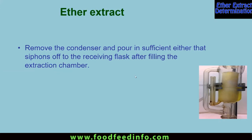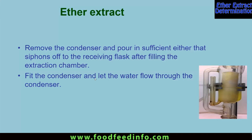Remove the condenser and pour in sufficient ether to siphon out of the receiving flask after filling the extraction chamber. At the start of the experiment, put ether in the extraction chamber up to a level so that it can automatically siphon into the flask. Add a little more ether so that if some evaporates the sample will not be affected. Fit the condenser and let the water flow through the condenser.